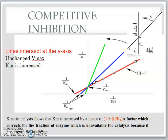With addition of inhibitor and without addition of inhibitor, you can compare and see the pattern of the graph for competitive inhibition. There will be a crossing at the y-axis, which means there will be an unchanged Vmax value for the reaction with and without inhibitor. But the Km value is increasing.